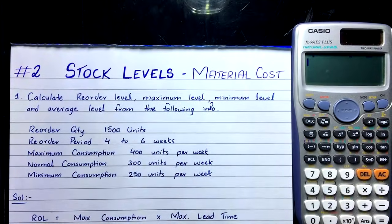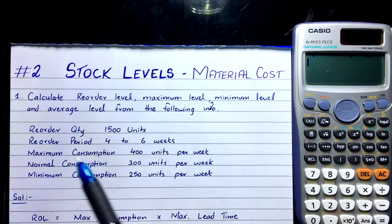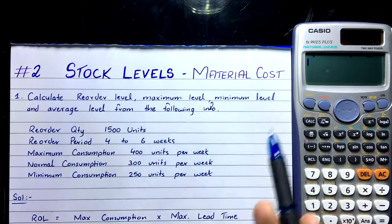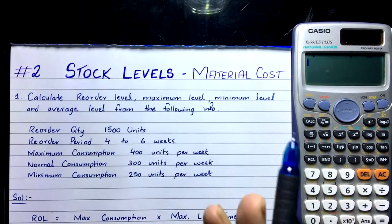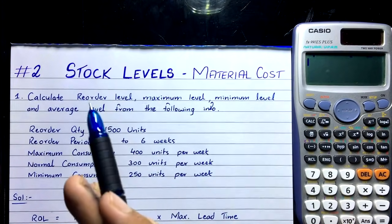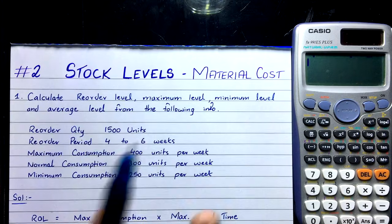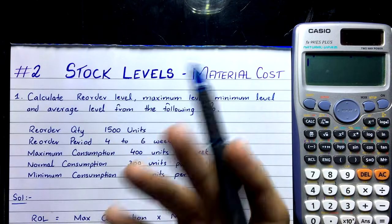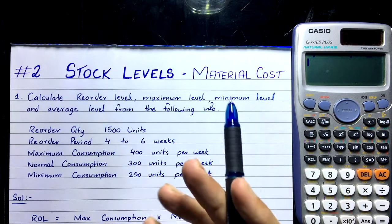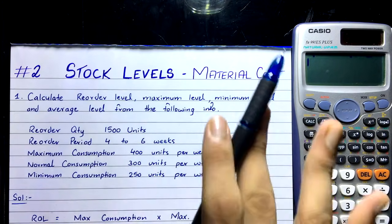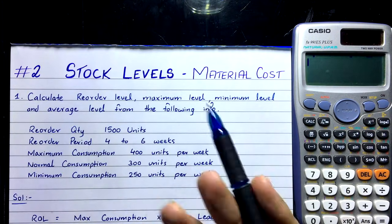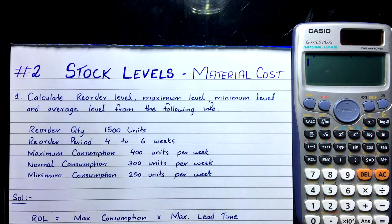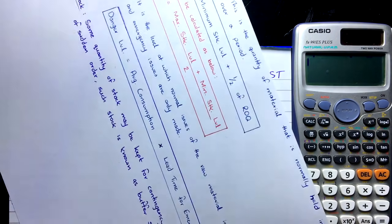Hi everyone, this is the second video of the stock levels topic of the material costing chapter. In the previous video we discussed the concept of stock level, inventory control, and we also covered the formulas for reorder level, maximum level, and average level.